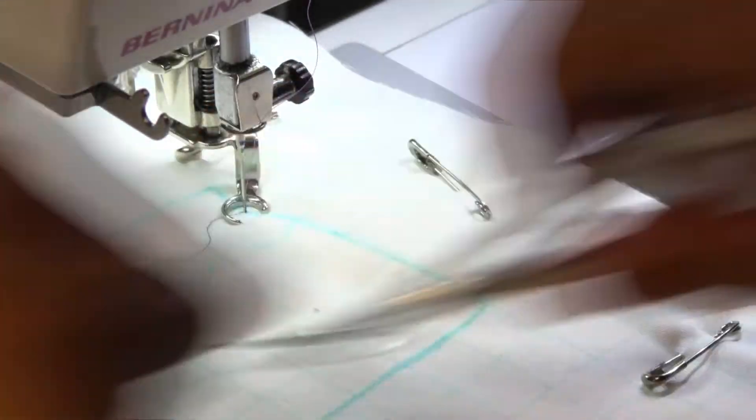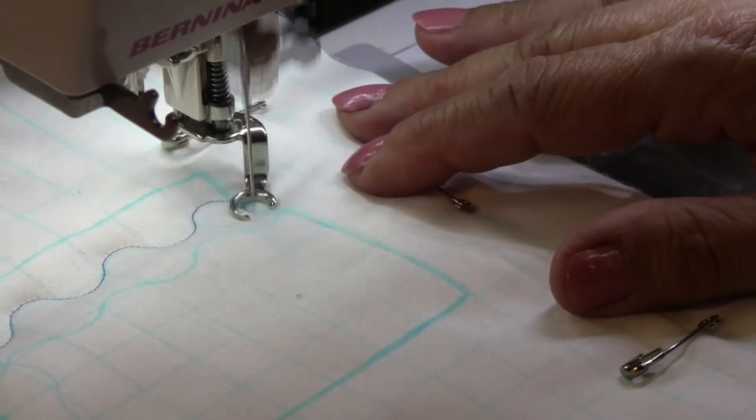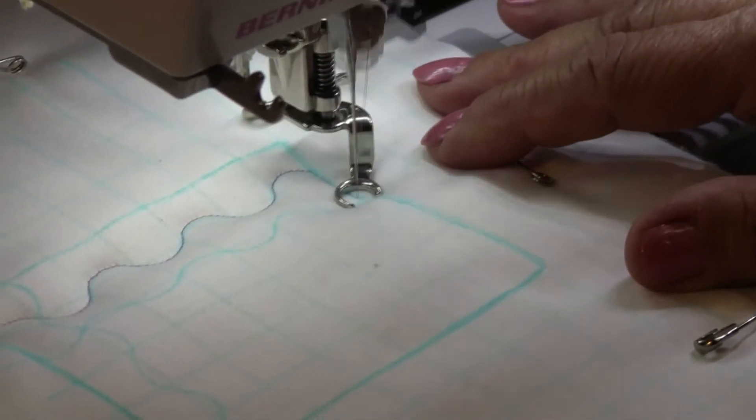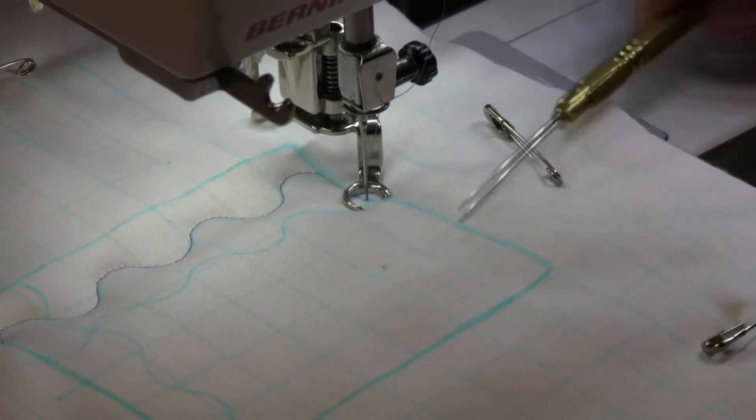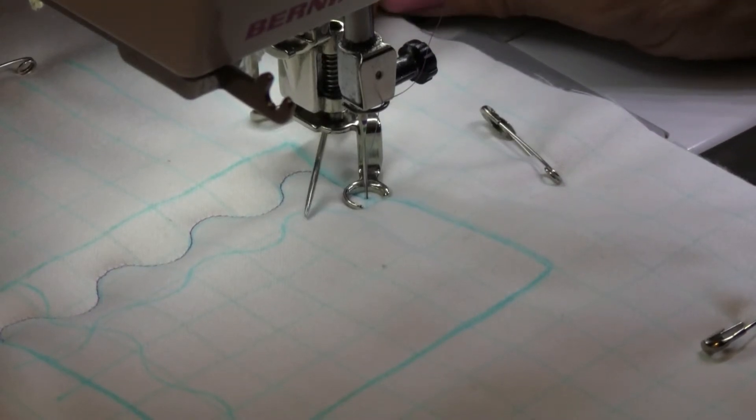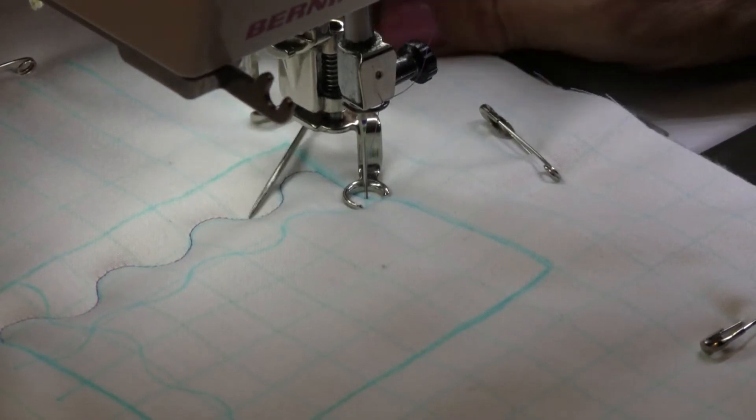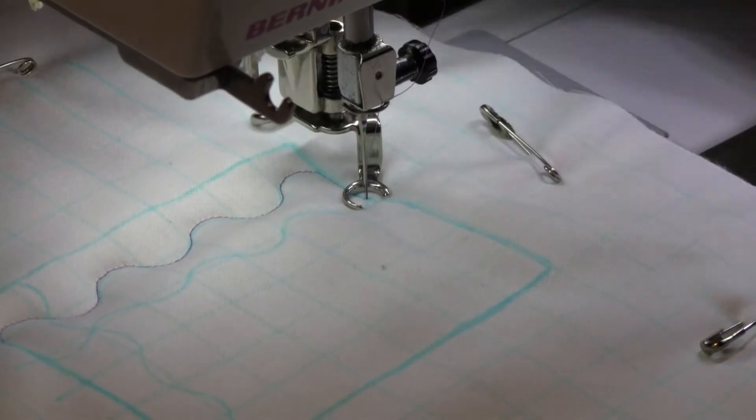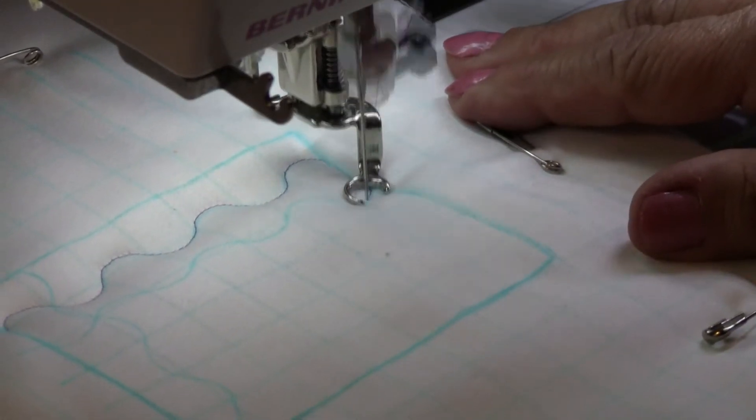Now that I've got one line down, I'm going to go down to the next line. And the thing to remember here is that every line is going to be the mirror image of the line before it. So these came in, this one's going to come in. Mirror image. This one's out, this one will be out. So mirror image the line that you previously stitched.